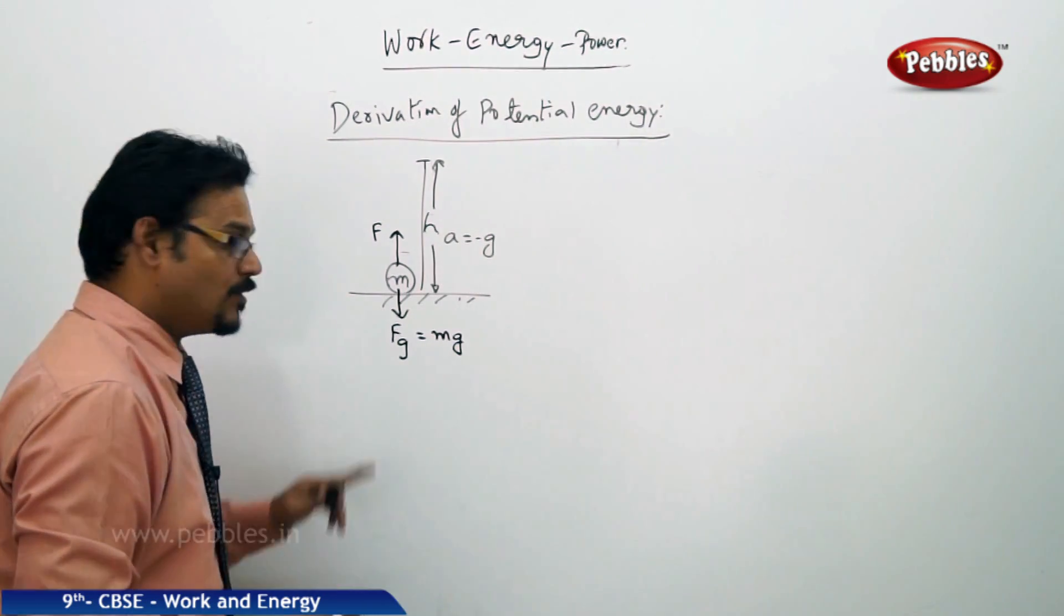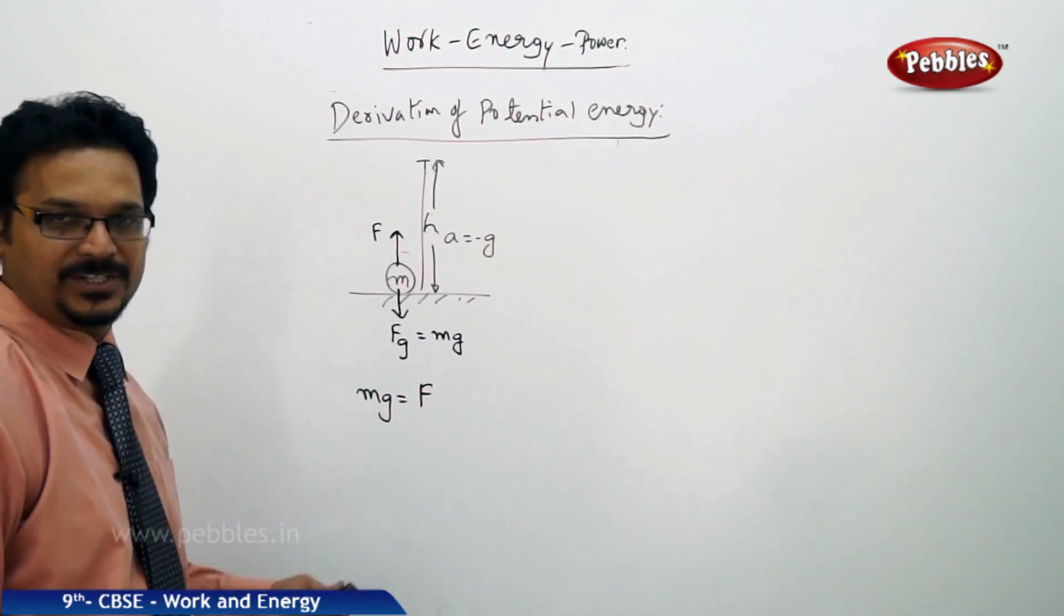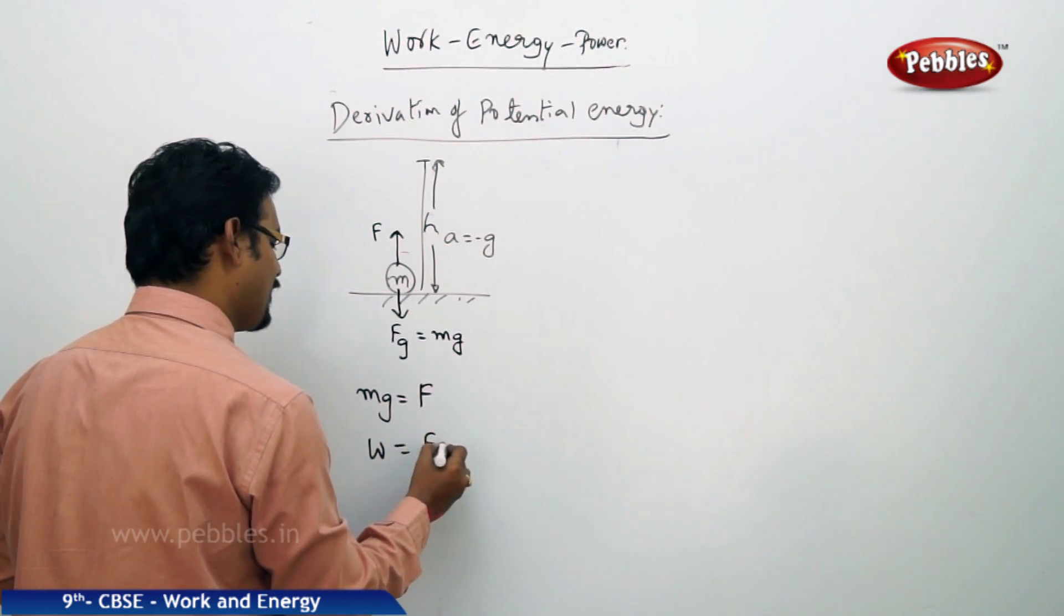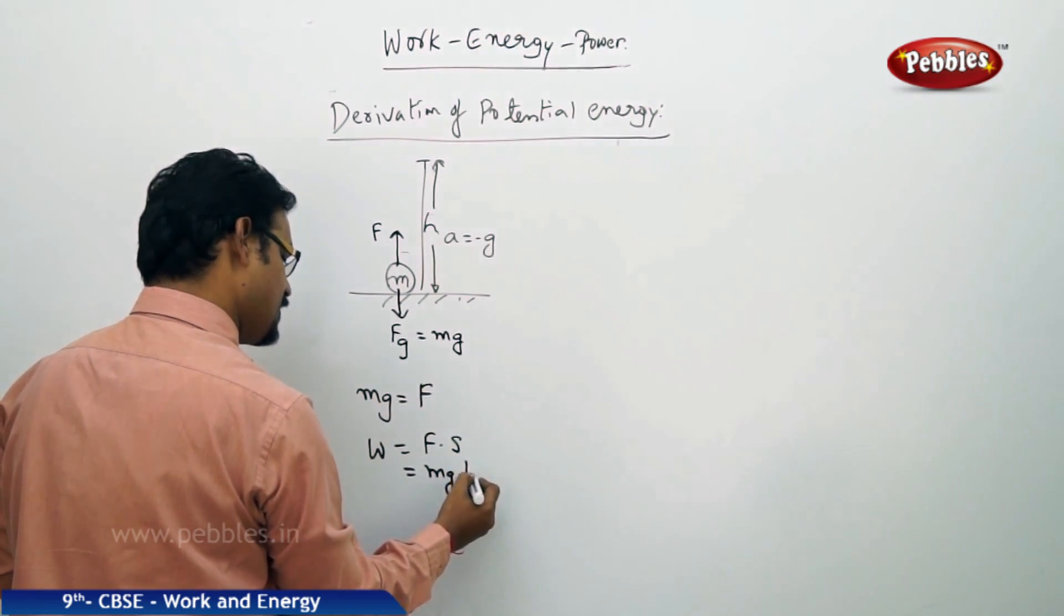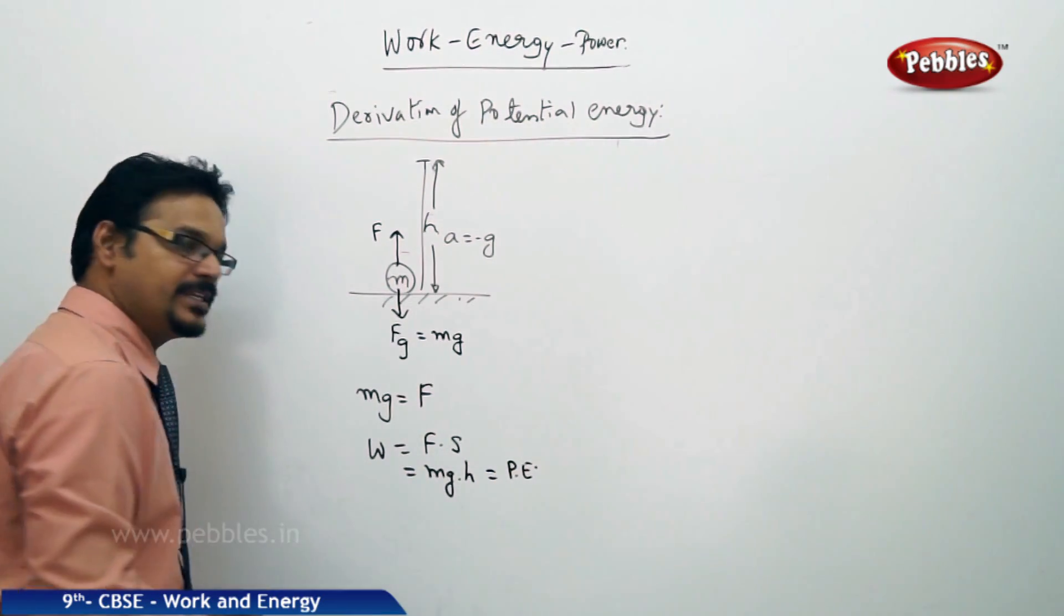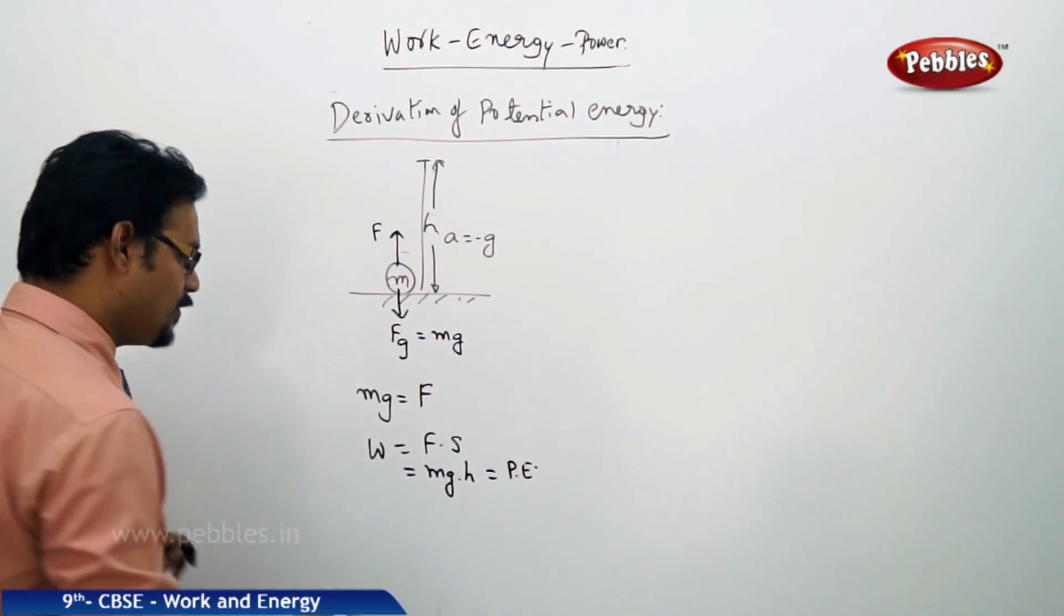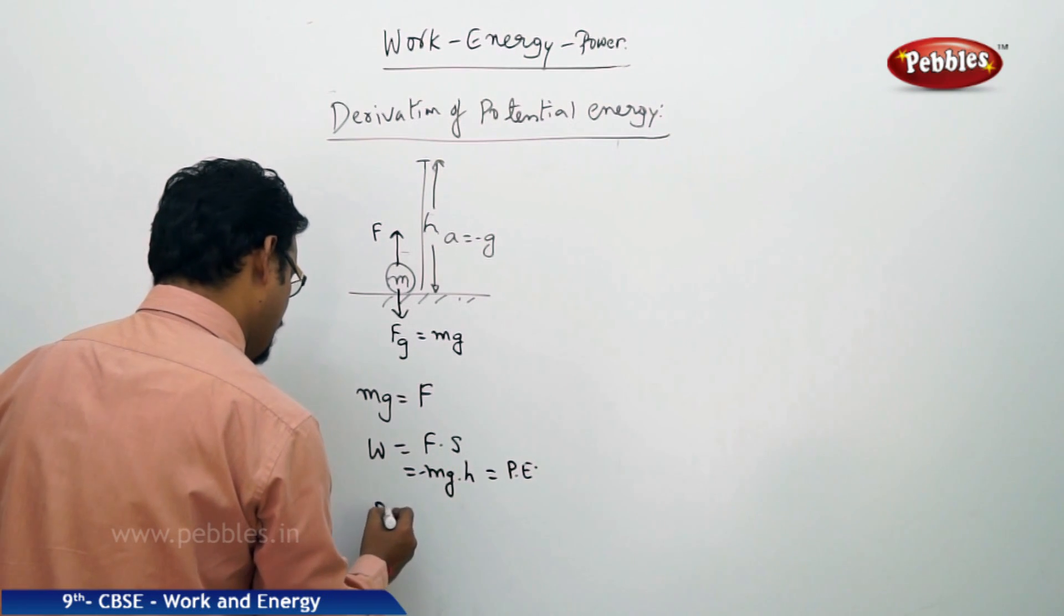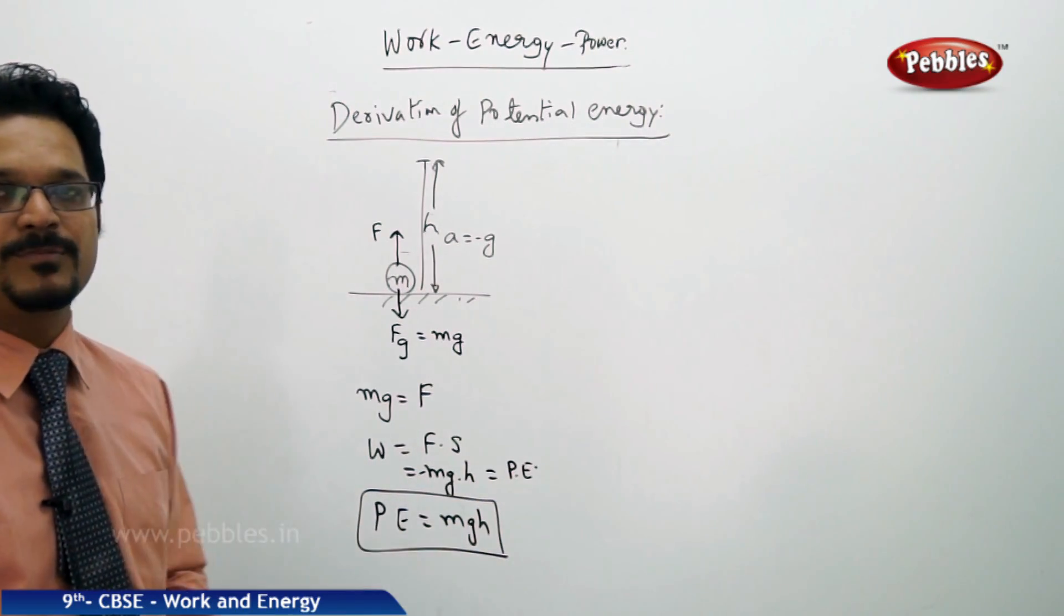The gravitational force is nothing but the weight of the body which is mg. So Fg equals F. The amount of work done W equals F into S, so the force F equals mg into S, where S is the height which is h. So this is nothing but potential energy. You need to take negative sign because you are moving upward against the gravity, but magnitude as potential energy is a scalar quantity, we can take only magnitude which is mgh.